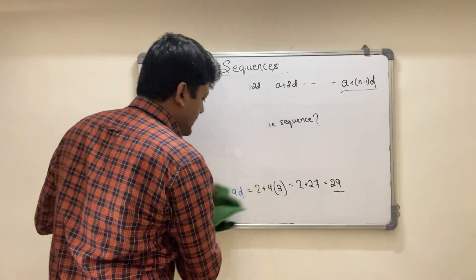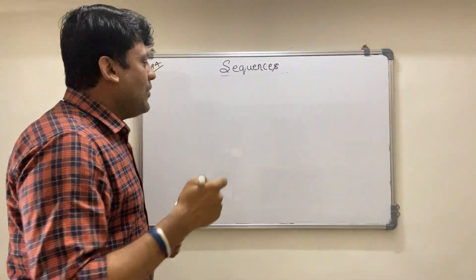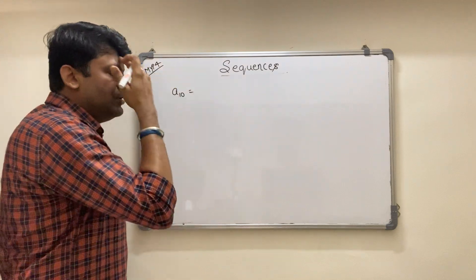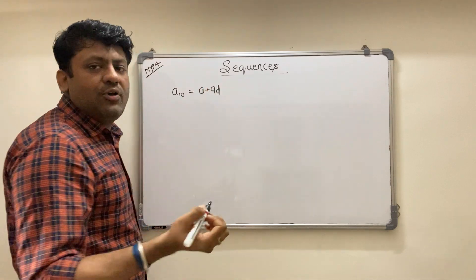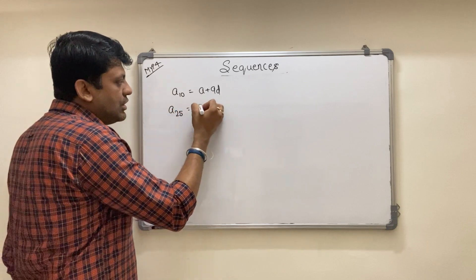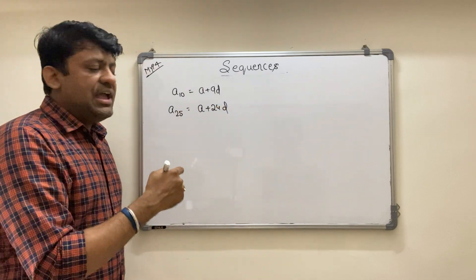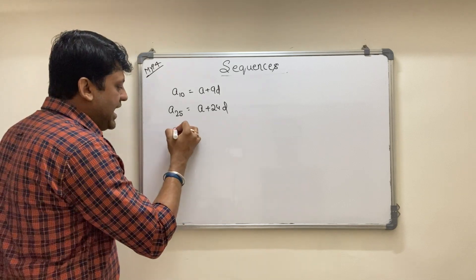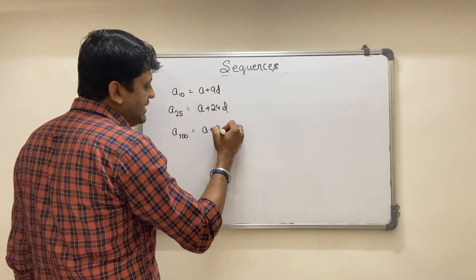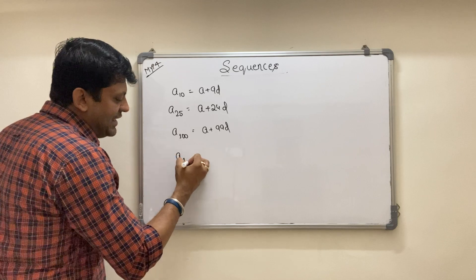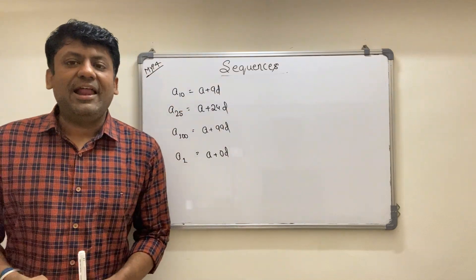Let's practice more. The tenth term is a + 9d — straightforward. The 25th term is a + (25−1)·d = a + 24d. The hundredth term is a + (100−1)·d = a + 99d. And the first term is simply a + 0·d = a. Understanding this part helps you solve questions much quicker.